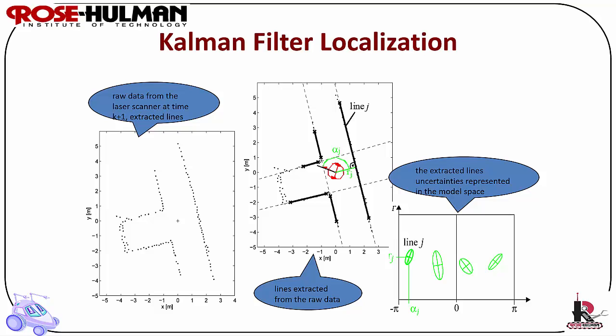Kalman filter localization uses raw sensor data to extract features such as lines as well as an initial position estimate. Next, there is an uncertainty associated with each line or robot orientation and position. It tracks the robot from a known position.